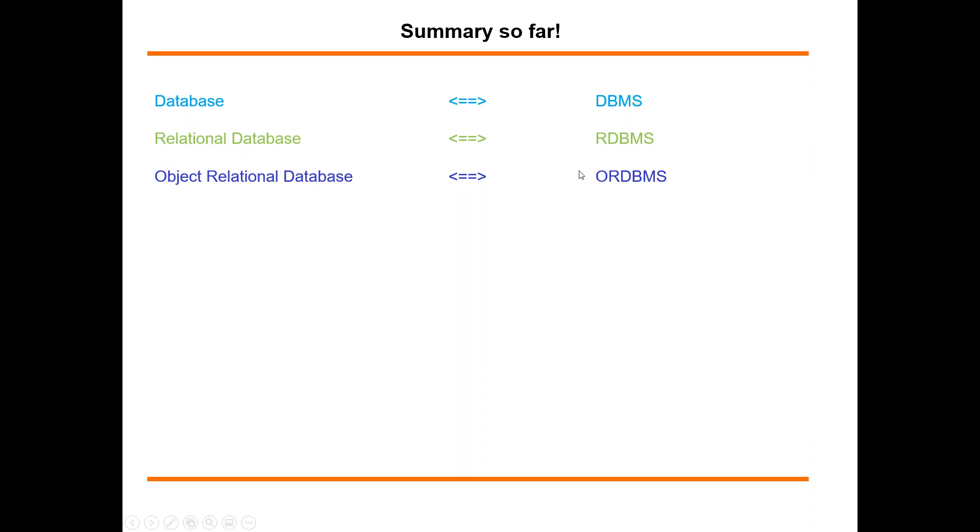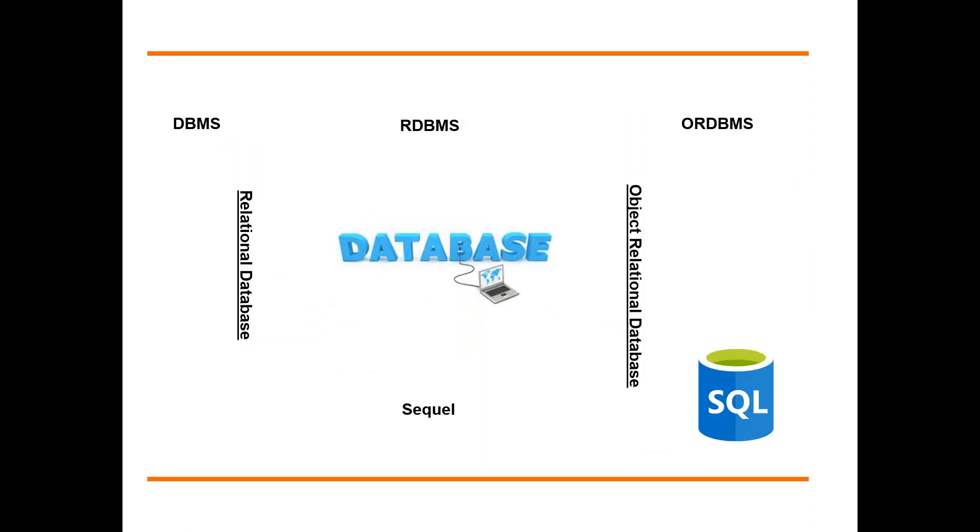For object relational database, it's an ORDBMS. Now, if I take you back to my first slide, this terminology is no longer a strange terminology. Now you know what is a database, what is a DBMS, what is a relational database and RDBMS, object relational database, and you have an ORDBMS.